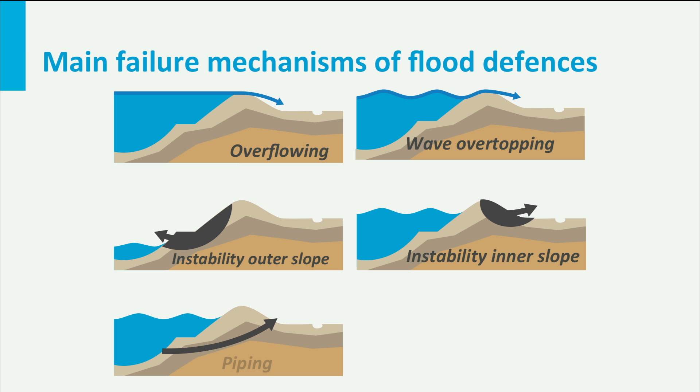Then there is piping or seepage. When the outside water level is high, increased groundwater flow will start under the dike and sandy soils can be eroded, thus undermining the dike. The initiation of this mechanism can be observed during high waters in the field when so-called sand boils start to form behind the dike.